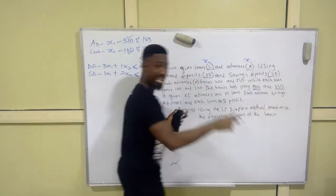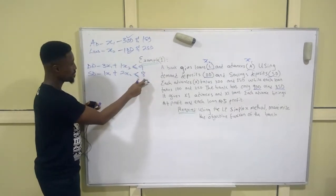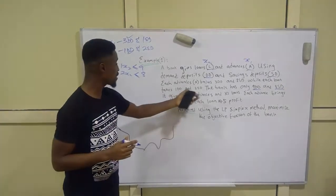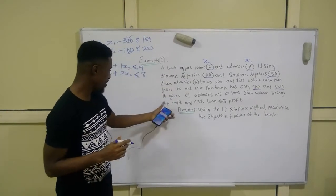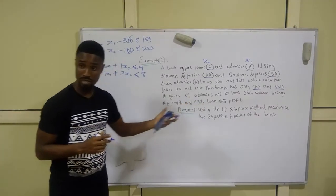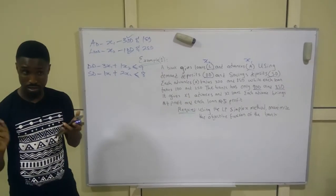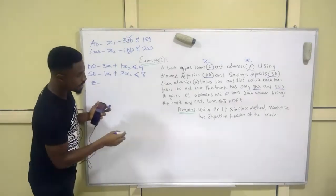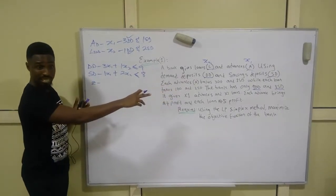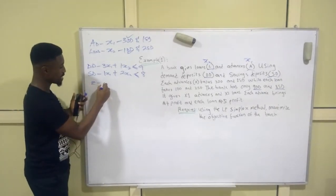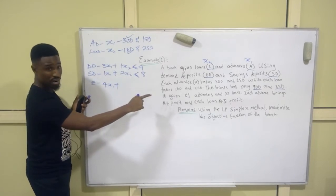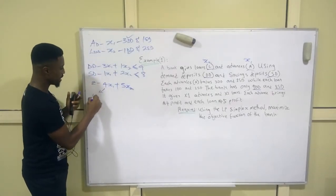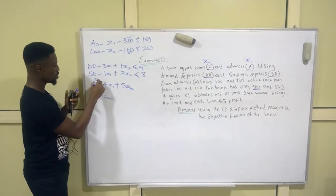That's where the nine and eight come from. Each advance brings four naira profit and each loan five naira profit. The profit function, represented as Z, is our objective function: Z = 4x1 + 5x2. This is subject to the two constraints we defined.